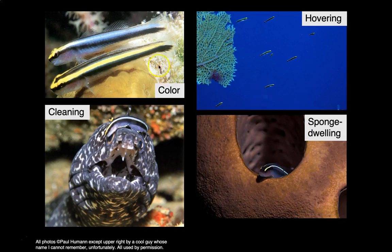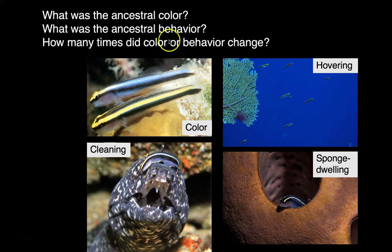So we have color — three different colors: blue, yellow, white — and three different behaviors. Your goal is to determine how many times did each color evolve and how many times did each behavior evolve. That's your goal for the second handout.